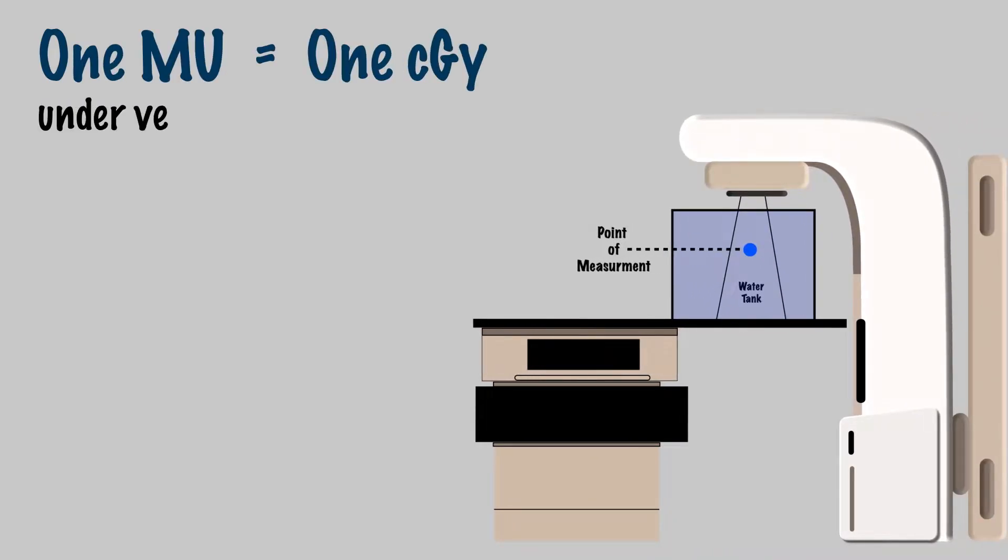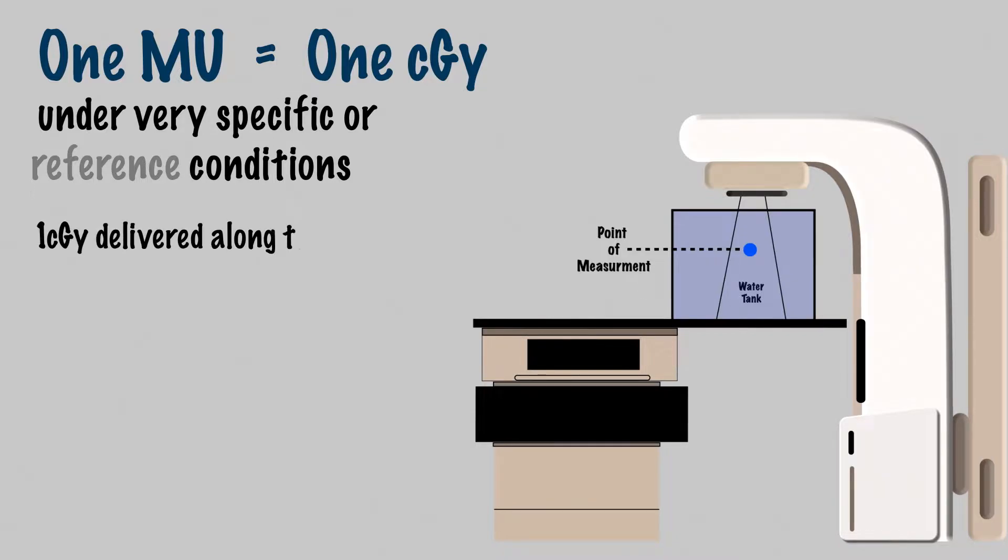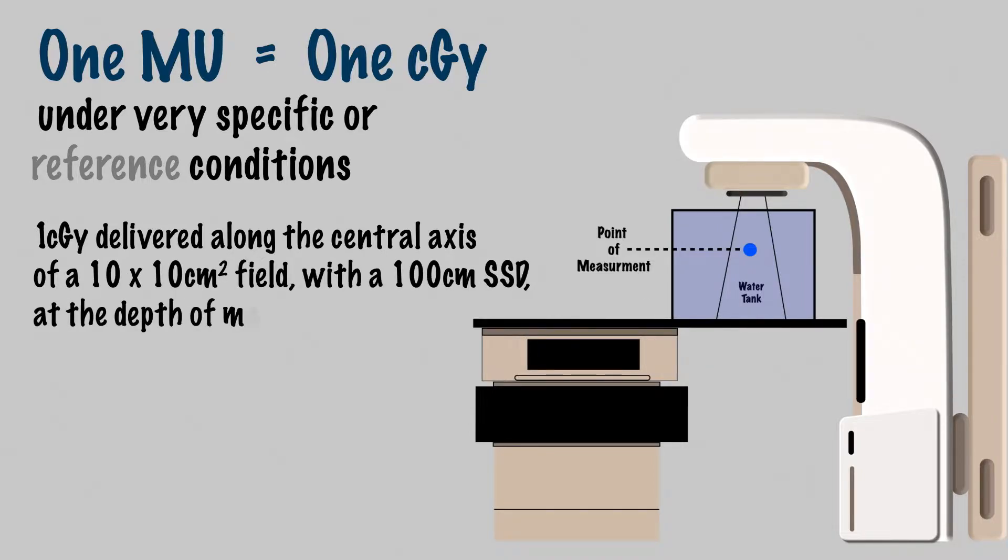First off, what exactly is a monitor unit? Well, one monitor unit equals one centigrade under very specific or reference conditions. Let's assume that your clinic uses the typical reference conditions and defines a monitor unit to be one centigrade delivered along the central axis of a 10 by 10 centimeter field with a 100 centimeter SSD at the depth of maximum dose, which we call D-max. When we prescribe a particular dose in centigrade, it is ultimately delivered by the LINAC in monitor units.